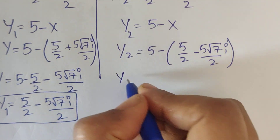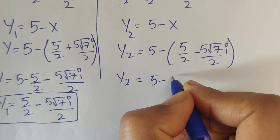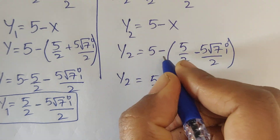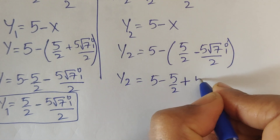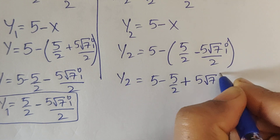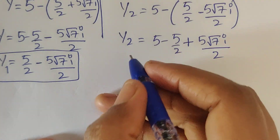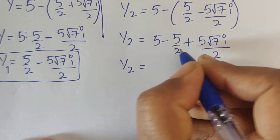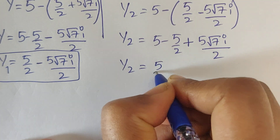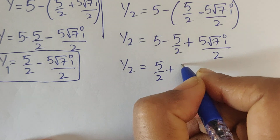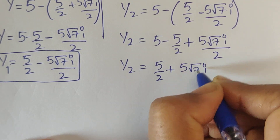For x₂, substituting into y equals 5 minus x: y₂ equals 5 minus (5 by 2 minus 5 square root of 7 i divided by 2). The double negative becomes positive, so y₂ equals 5 by 2 plus 5 square root of 7 i divided by 2.